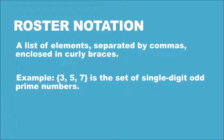The roster notation is a list of elements separated by commas enclosed in curly braces. Example: {3, 5, 7} is the set of single-digit odd prime numbers.